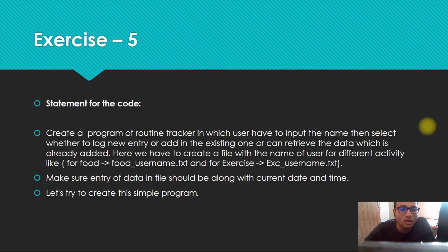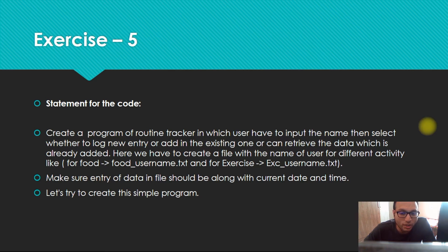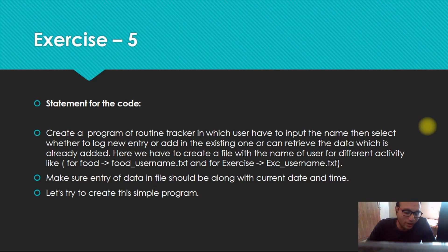You can run it on your system. Now, the statement for the code: in this we have to create a program called a routine tracker in which the user inputs their name, then selects whether to log a new entry, add to an existing one, or retrieve already-added data. We have to create a file with the user's name for different activities — for food: food_username.txt, and for exercise: exe_username.txt. Make sure the entry of data in the file includes the current date and time.